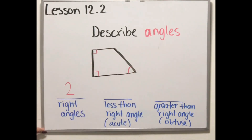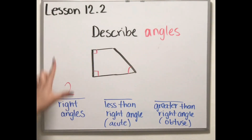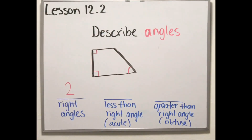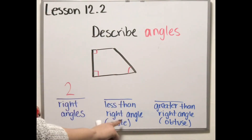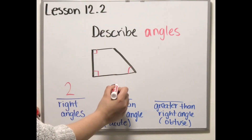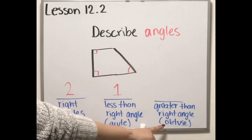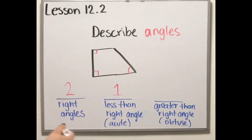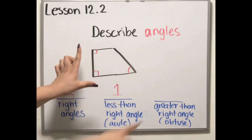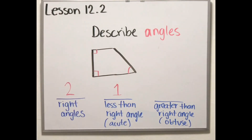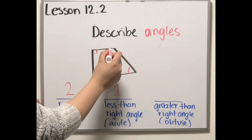Is this one making less than a right angle — is it smaller or bigger than the right angle? That one is making bigger, so that one is the only acute — we only have one acute angle. And for the last one, the obtuse, which is greater than the right angle — that one is the obtuse, and there is only one obtuse angle in this shape.